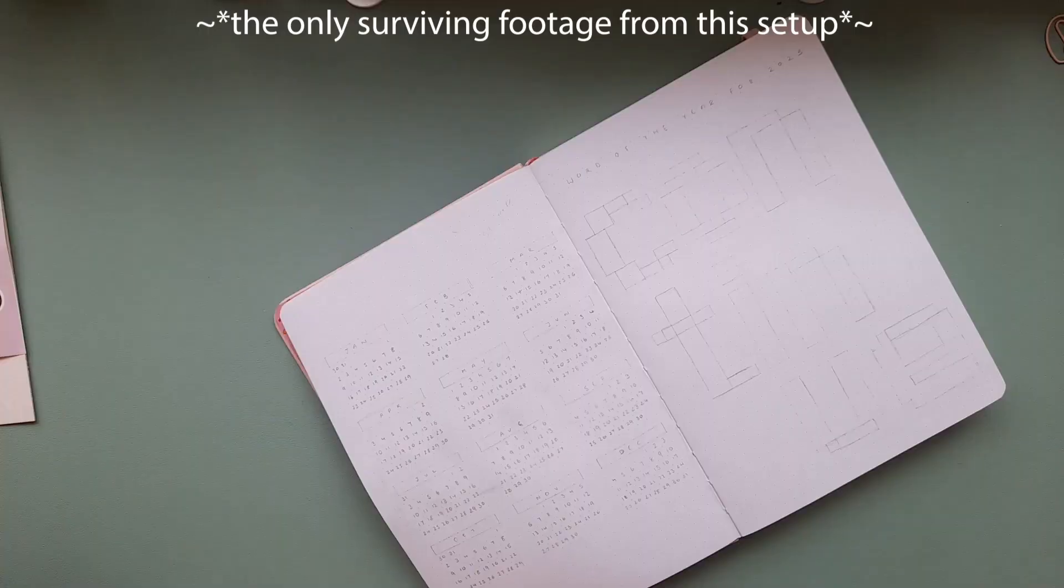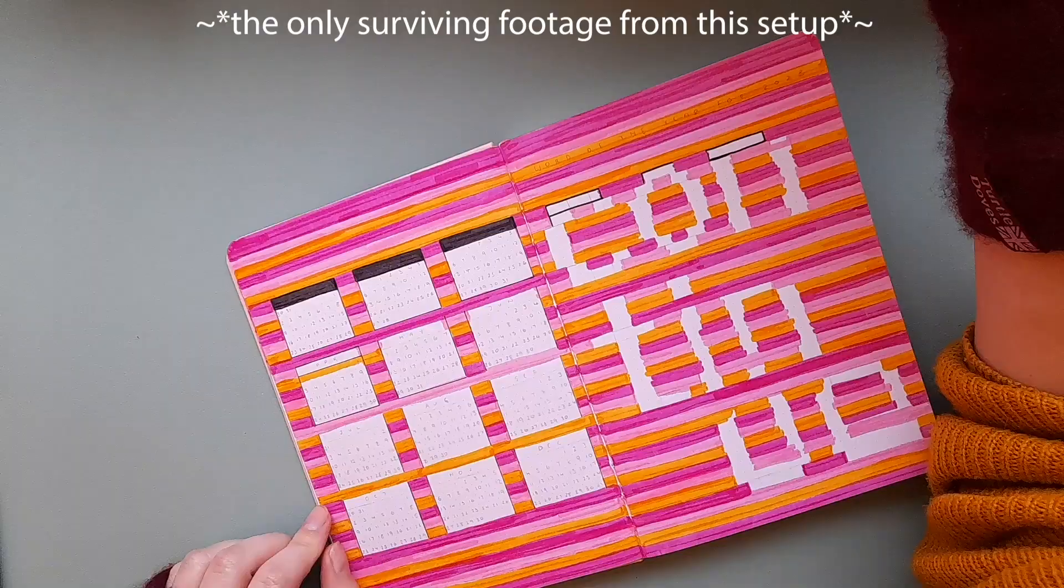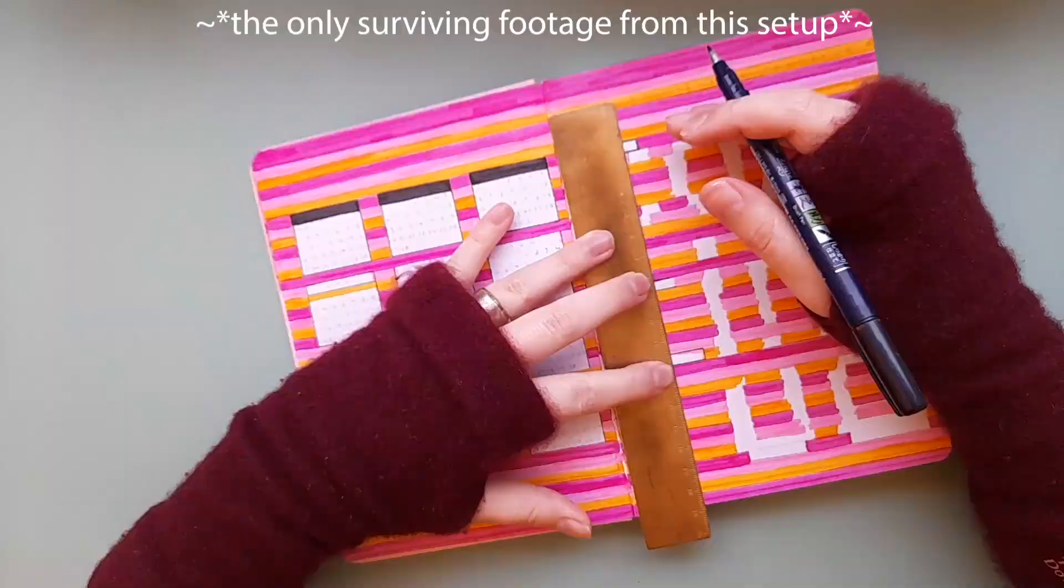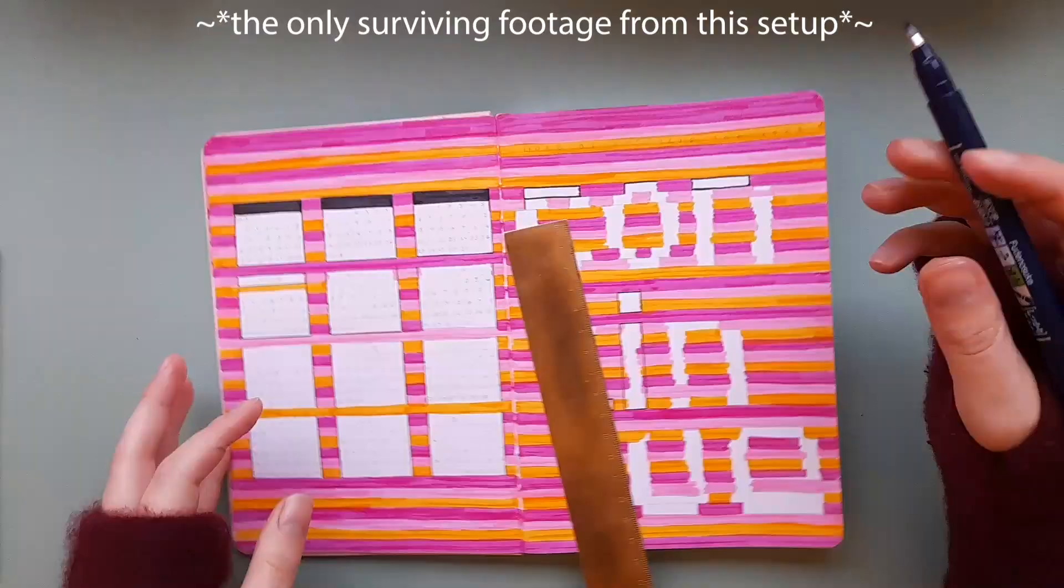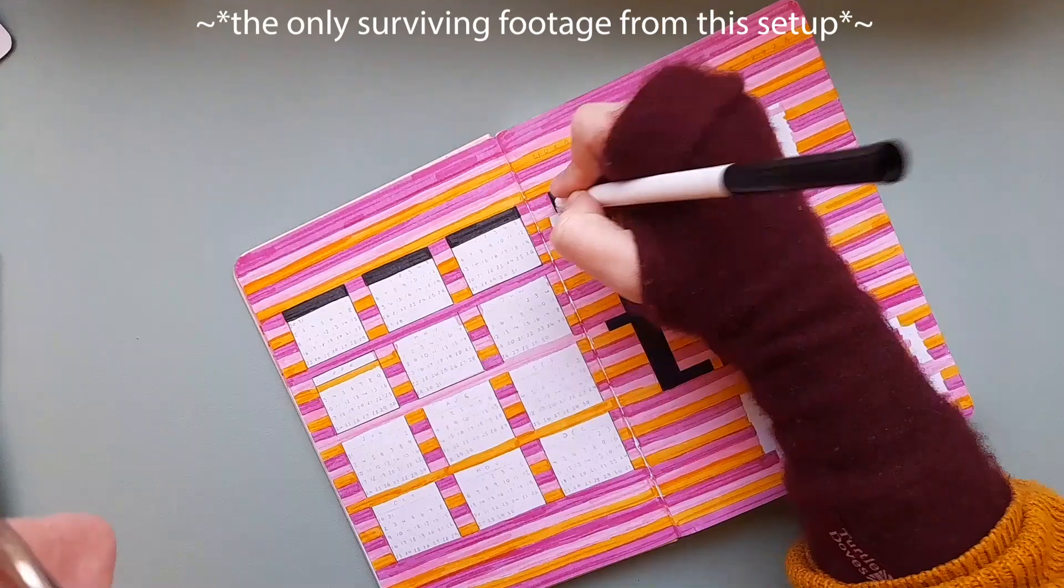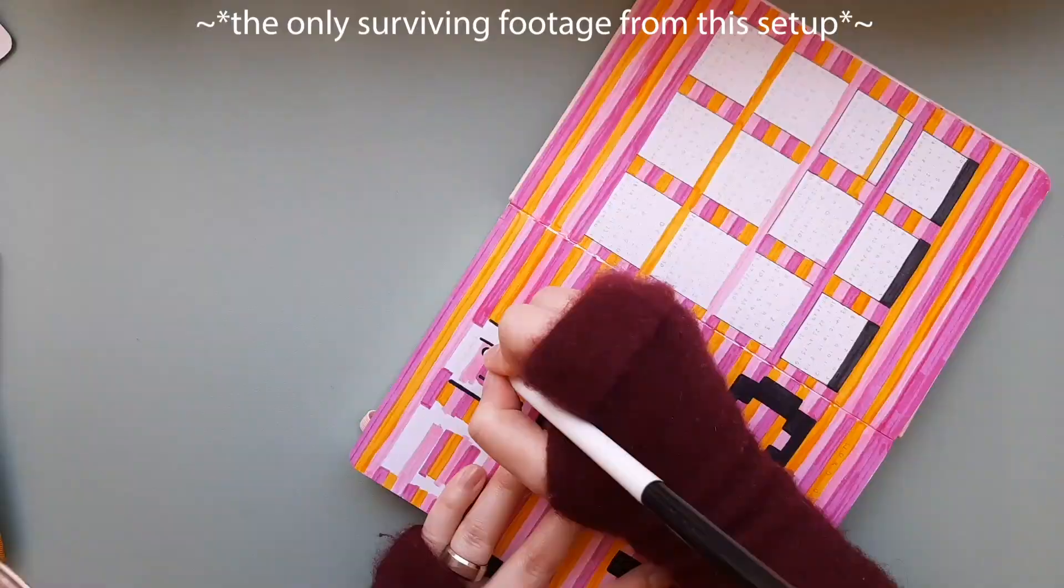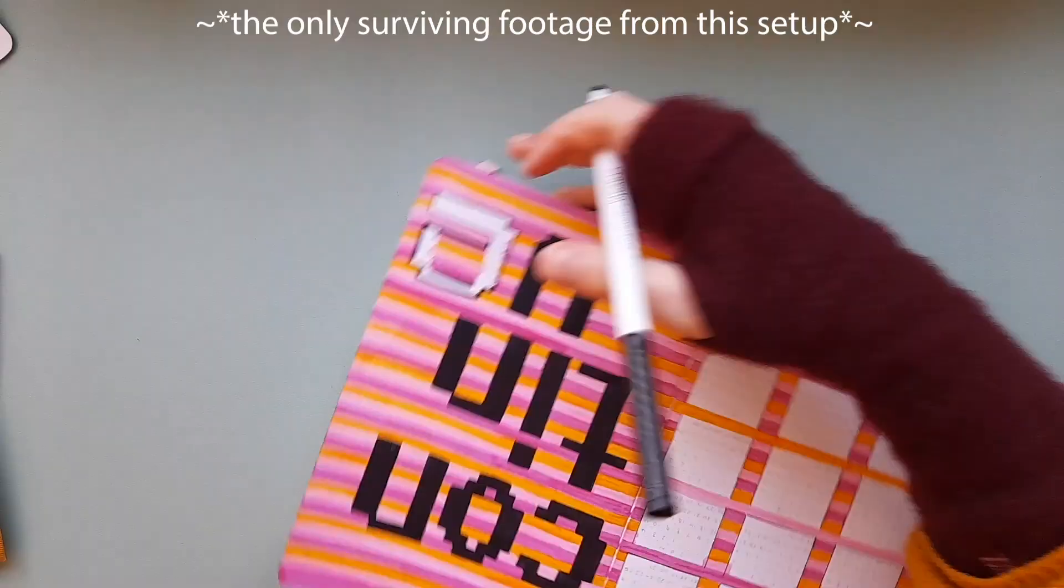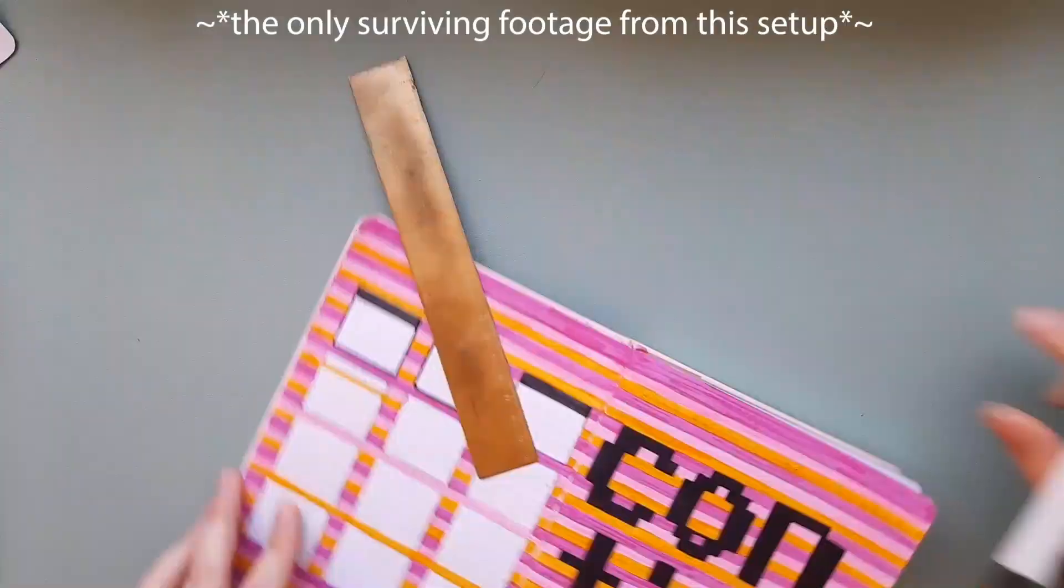But honestly this sticker set really restarted my love of orange and pink as a colour combination and I'm just loving it, I'm living for it. The spreads in this setup include a title page, a year at a glance and a vertical future log for all 12 months because I like to have a good overview of the year.